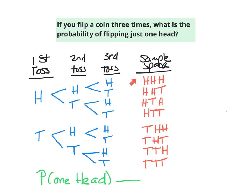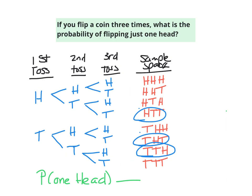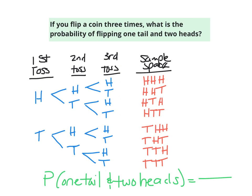The first two outcomes have more than one head. This one has two heads. This one does have one head, so we circle that. The next has two heads; the next has one head — circle that. The next one has one head. So I have three outcomes out of eight, giving a probability of three-eighths.